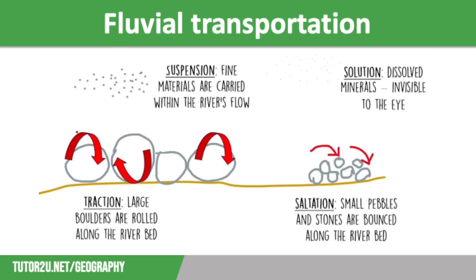Let's move on to fluvial transportation — the process by which a river carries its load. Loads differ in size from large angular boulders in the upper course to fine suspended silt in the lower course. Load comes mainly from material that has weathered and tumbled down the hillside, although some comes from eroded riverbanks. There are four specific processes of transportation. The first is traction: near the source, the bed load is quite large and heavy, so large boulders and rocks are rolled along the riverbed as they are too heavy to move in any other way. This type of transportation is found in the upper course.